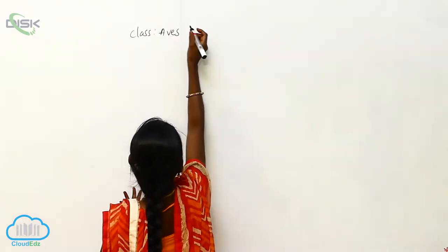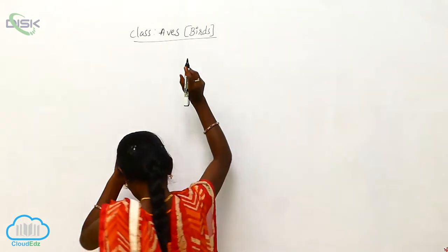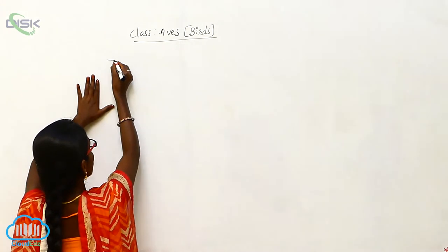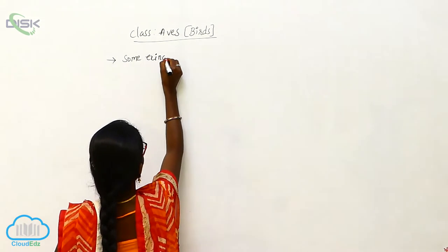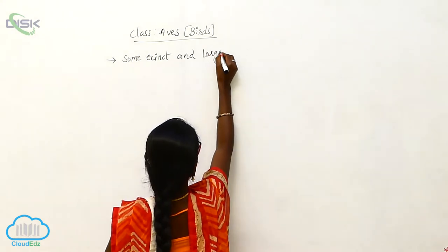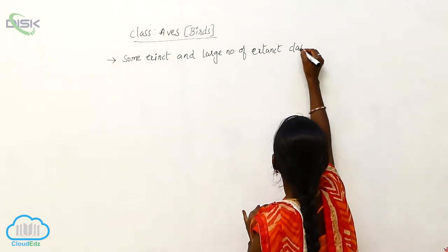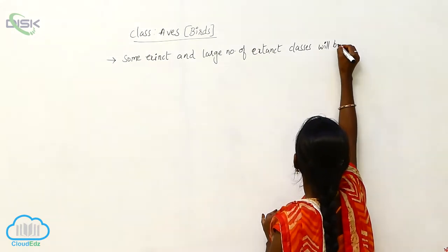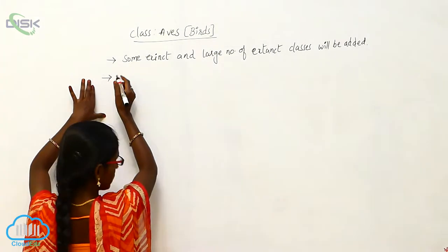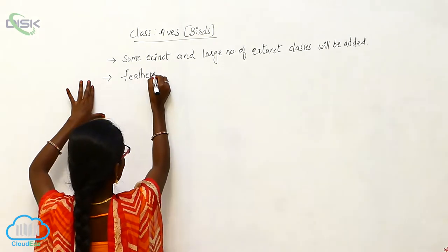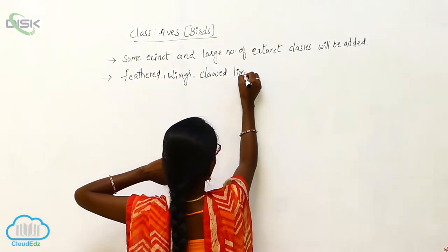Class Aves, also called birds. The Aves include some extinct and a large number of extant classes. These organisms have feathered bodies and wings, with clawed limbs present.